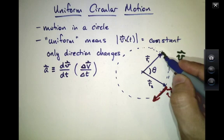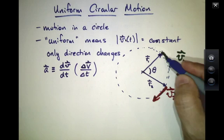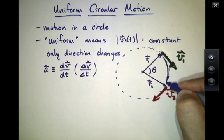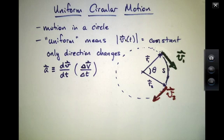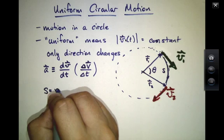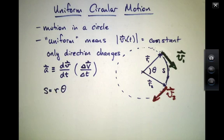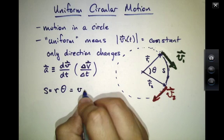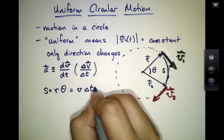How far will the object go? Well, it will travel an arc length, S. And we know that S is equal to R times theta, where R is the length of the radius of the circle. Theta is the angle subtended. And this equals the speed times delta T.